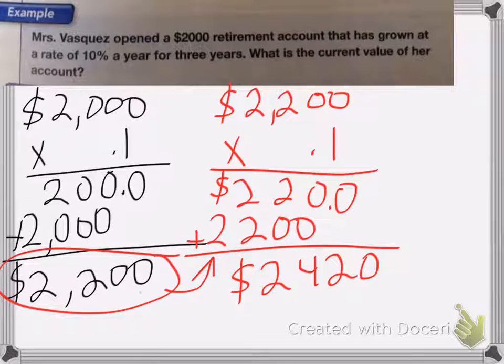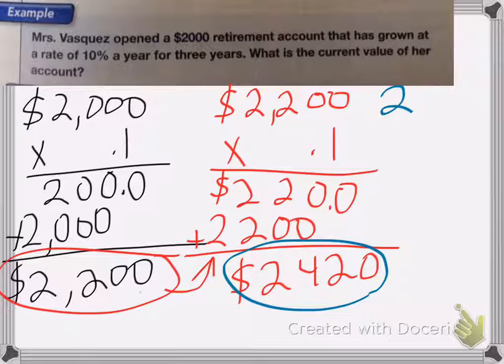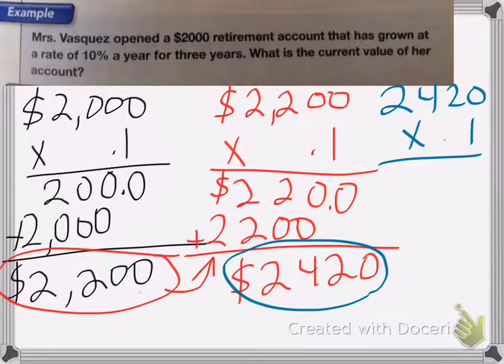Then the third year, I take this amount and I multiply it by 10%. Multiply that out. So this year, she gets $242.